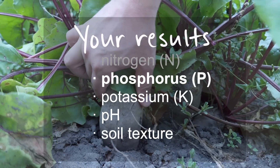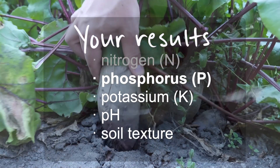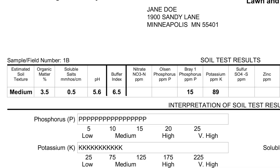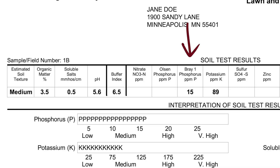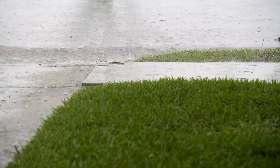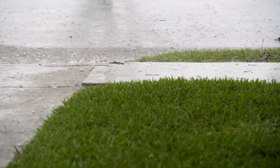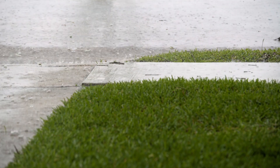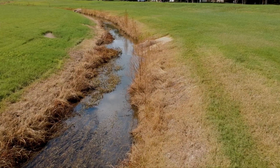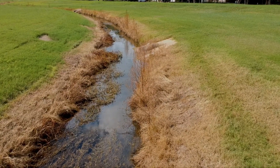Next up is phosphorus. Phosphorus supports root growth and fruiting in the plant. Phosphorus is of course important for plant growth, but if you apply too much phosphorus to your garden, it will escape into streams and waterways. This is very bad for the larger ecosystem.